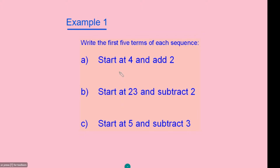We need to write out the first 5 terms of each sequence. For question A, the sequence starts at 4 and increases by an addition of 2. So the sequence begins at 4, increases by 2 to get 6, then 8, then 10, then 12. These are the first five terms in the sequence.